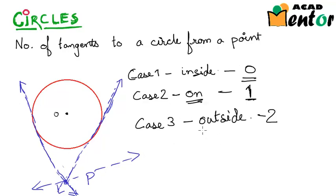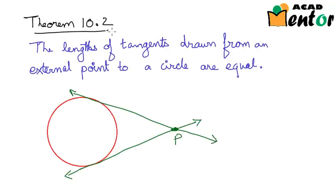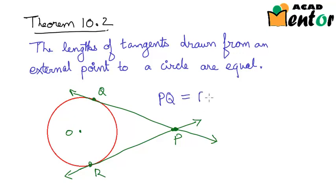Now let's consider a theorem which takes into consideration a point outside the circle and the two tangents formed by it. This is theorem 10.2 in the NCERT book, and it states that the lengths of tangents drawn from an external point to a circle are equal. That means if PQ and PR are two tangents to the circle at points Q and R respectively, then PQ equals PR.